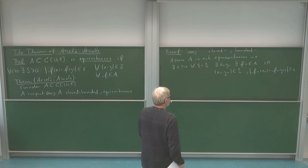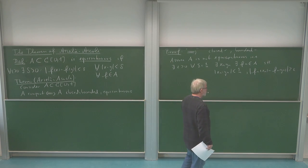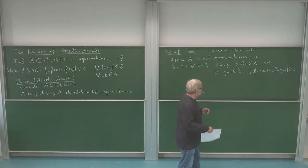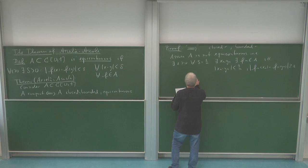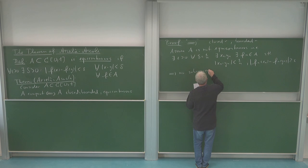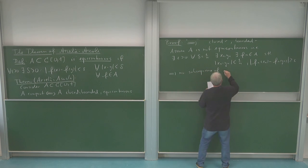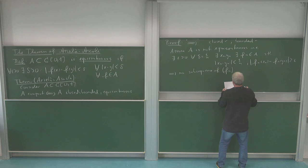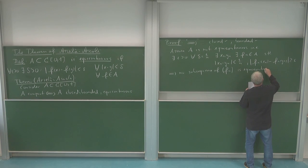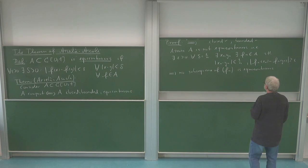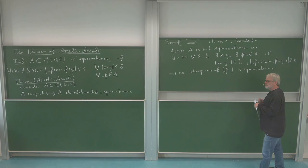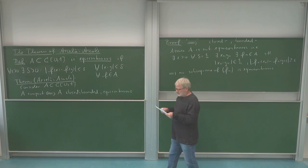This tells me that the sequence fₙ is not equicontinuous, and any subsequence of this sequence also cannot be equicontinuous. So no subsequence of fₙ is equicontinuous, because the violation of equicontinuity carries over to subsequences as well.